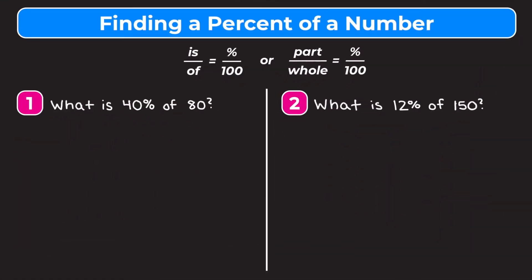In this video we're learning how to find a percent of a number using the percent proportion. At the top of our screen we'll see two proportions and we can use either one. The main one on the right says part over whole equals percent over a hundred. The one on the left is a shortcut where the part is associated with the word 'is' and the whole is associated with the word 'of' in our problem.